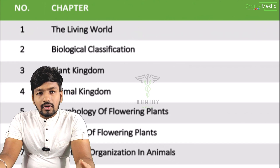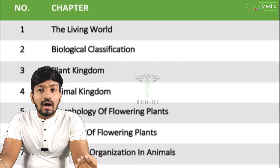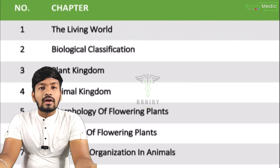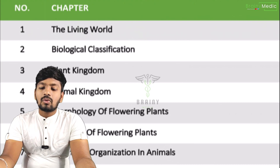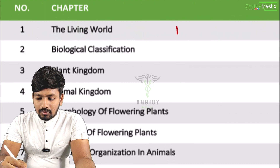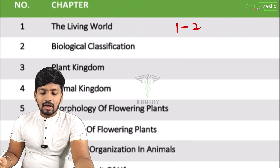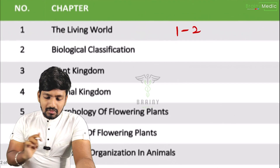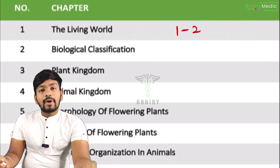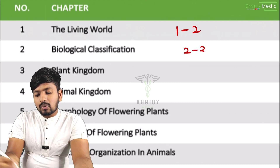Living world is a basic lesson. In the last two years, there are 100% questions. In Manipur need paper, there are three questions about living world, but generally minimum one to maximum two. Biological classification is a high-weighted chapter with two to three questions.